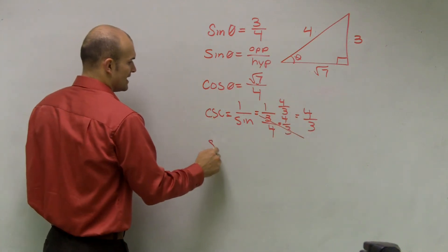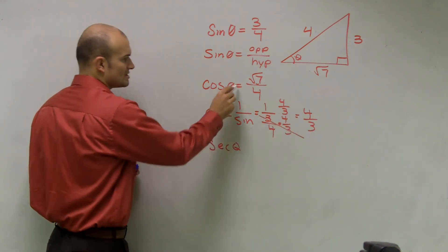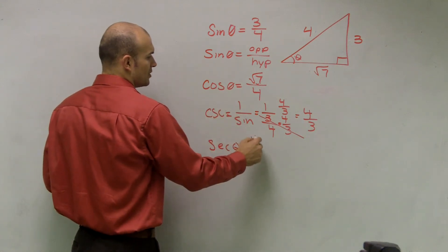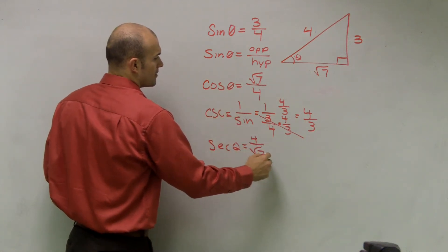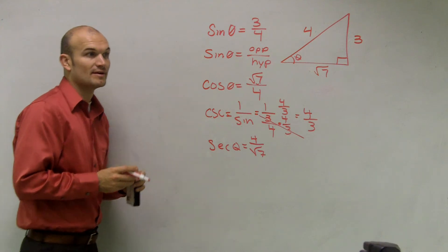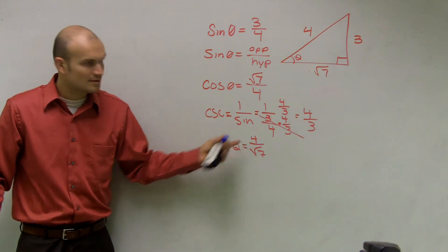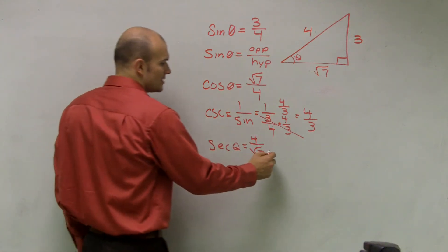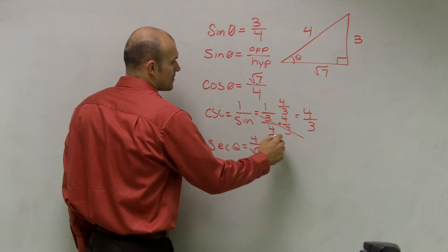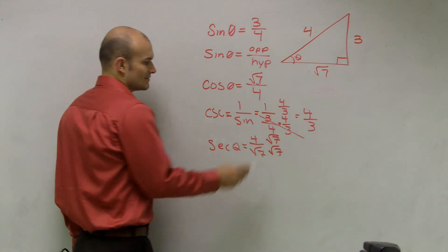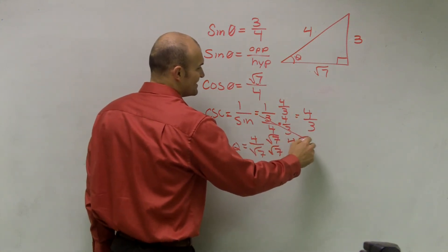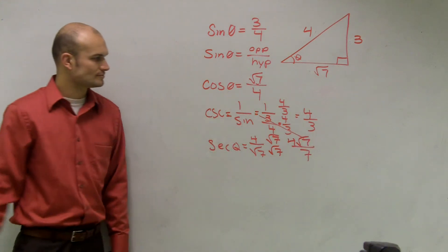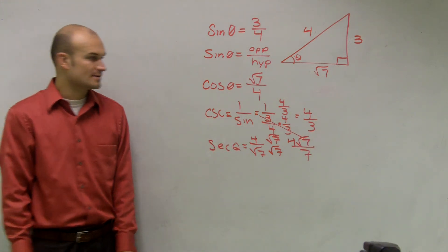So therefore, the secant, which is the reciprocal of cosine, is going to be the reciprocal of this. Four over radical seven. However, we can't leave a radical on the bottom, so you have to rationalize the denominator. Four times radical seven over seven is your secant.